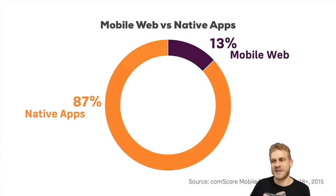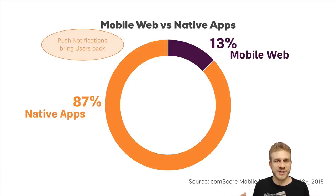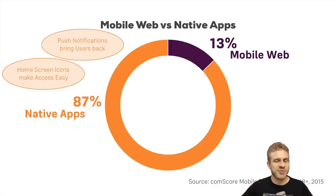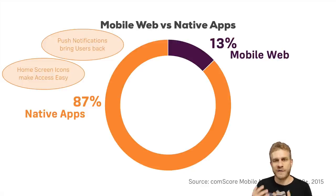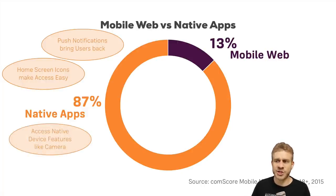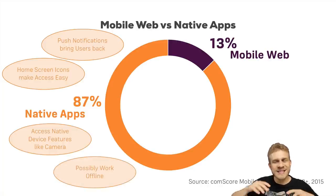Let's find out why people spend so much time in native apps. One important factor is push notifications — they drive users back into the apps. Push notifications communicate with you even if the application is closed, even if the phone is in your pocket. Additionally, home screen icons make it easy to start the app. Getting onto the home screen has traditionally been hard for web apps — you don't have an app store where people search for you. Native apps also have access to device features like the camera and geolocation, and many work offline.